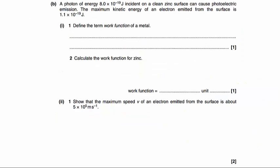Part B, a photon of energy 8 times 10 to the minus 19 joules is incident on a clean zinc surface that can cause photoelectric emission. The maximum kinetic energy of an electron emitted from this surface is 1.1 times 10 to the minus 19 joules.